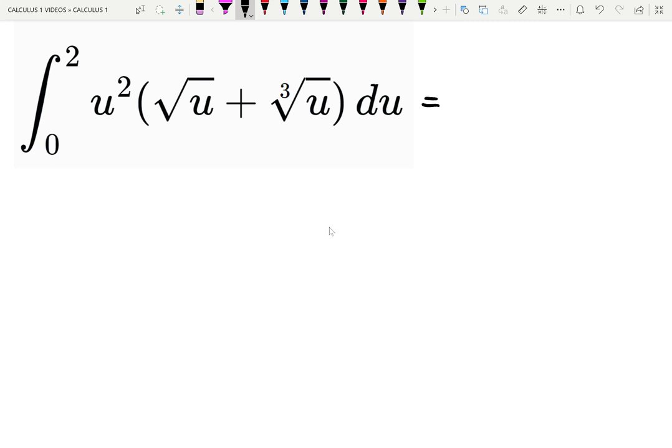Before integrating, it is often important to simplify the expression inside of the integral, which is called the integrand. So let me distribute u squared is multiplied by u to the one-half, because square root can be written as one-half. Plus, u squared is also multiplied by u to the one-third.